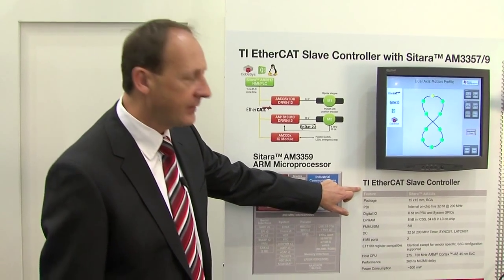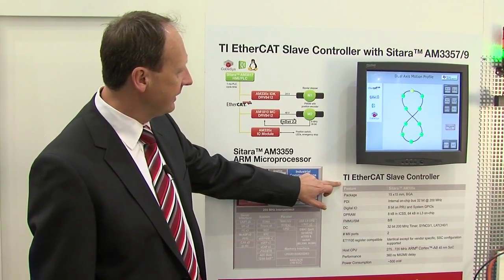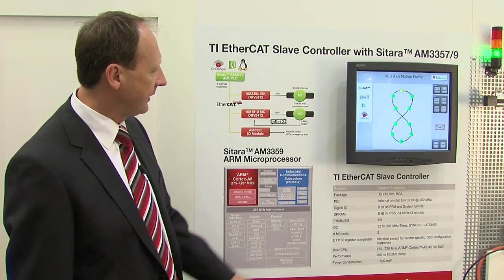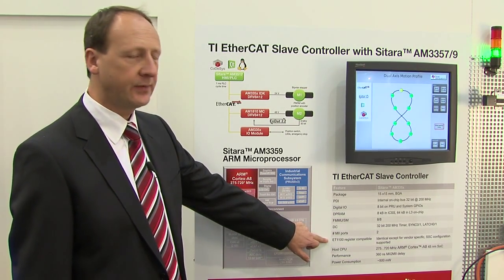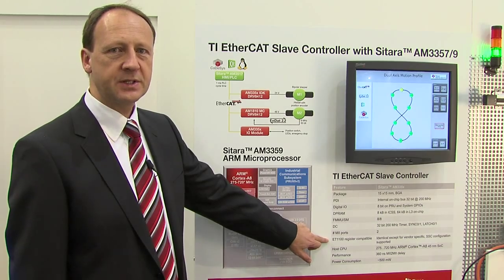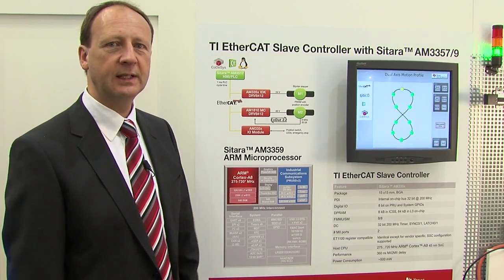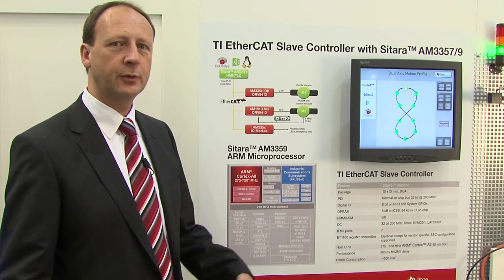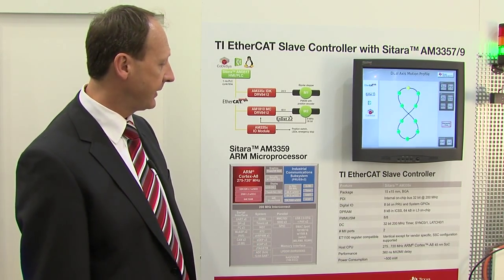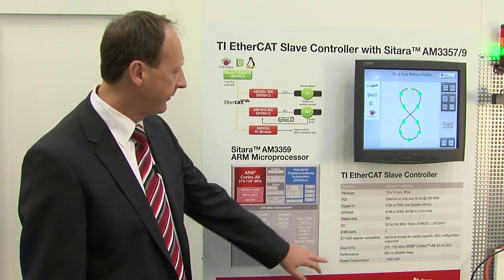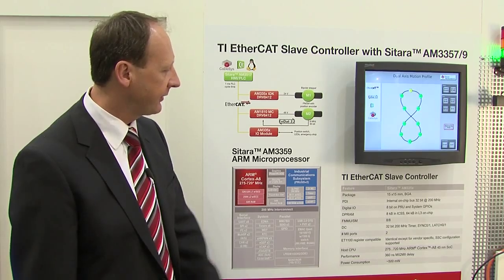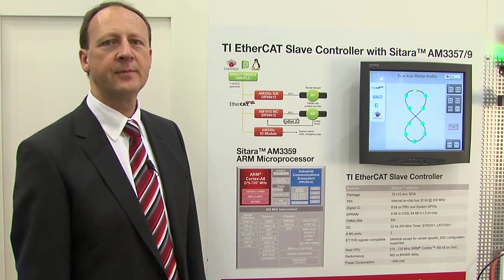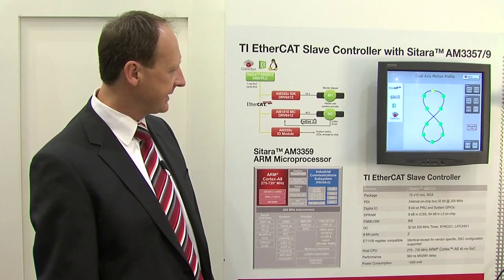The EtherCAT slave implementation features full compatibility with the ET1100 ASIC, which allows customers to reuse existing stack software. The performance is also identical, with a very fast 360 nanoseconds MI to MI latency.